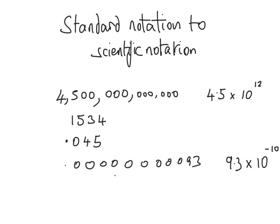It's important to understand why this is correct. 10 to the power of 12 means 10 multiplied by itself 12 times, which gives you 1 trillion. So 4.5 times 1 trillion gives you 4 and a half trillion — it makes sense. This is a much easier number to work with, and since we can have even bigger numbers to deal with, we need an easy way to handle them.